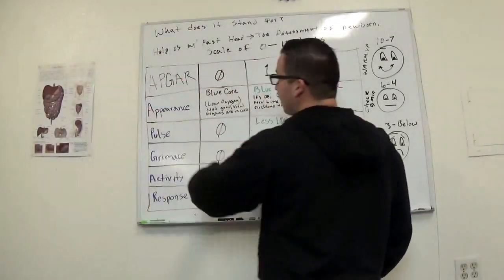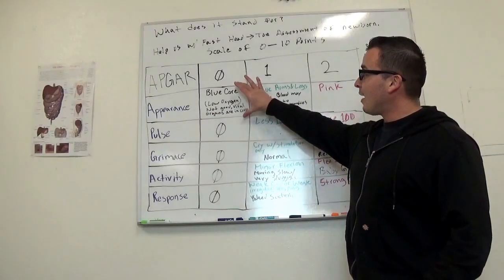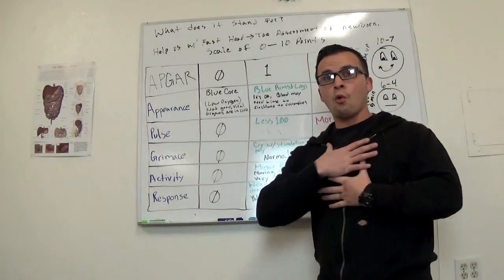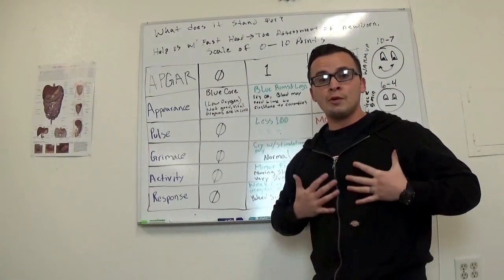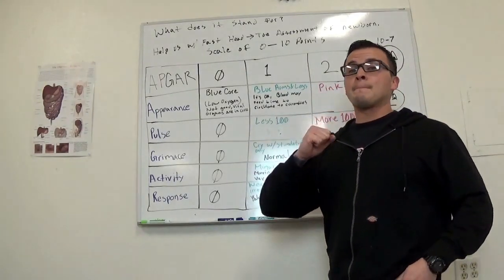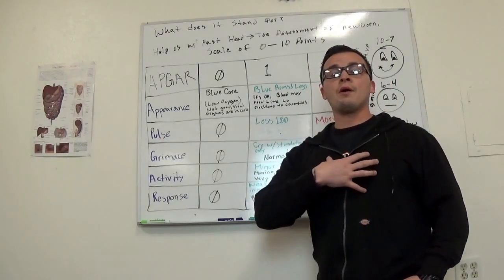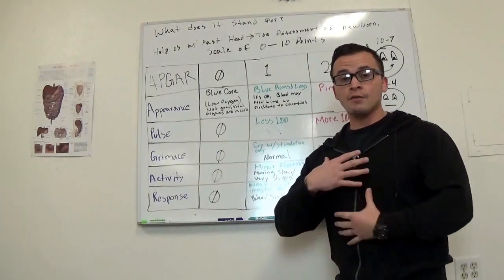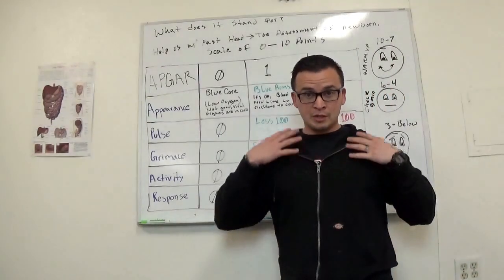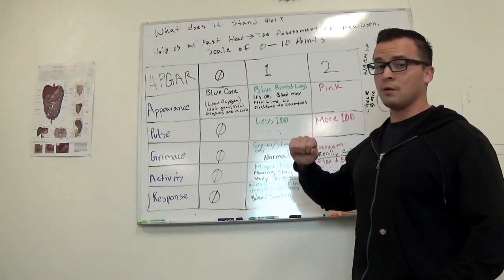So on the Appearance portion of the APGAR, if your baby has a blue core, so this is the core, the thoracic region, the abdominal region, if that's blue, you're going to get a 0 because that means that there's very low perfusion going on in this region and we have the vital organs in this region right here. So that's why that's a big deal. So they get a 0.